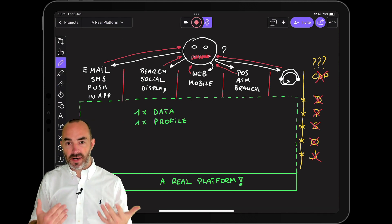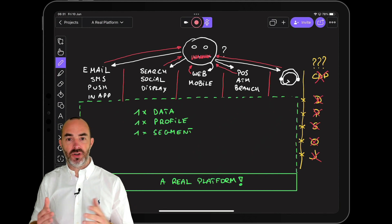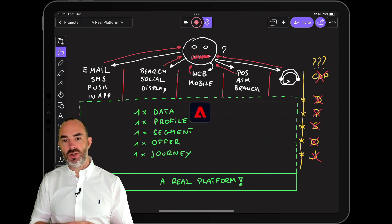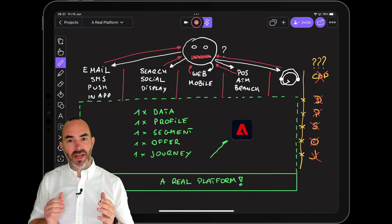And it should also give you an environment where every segment, offer, and journey is defined just once. That environment is called Adobe Experience Platform, a real platform.